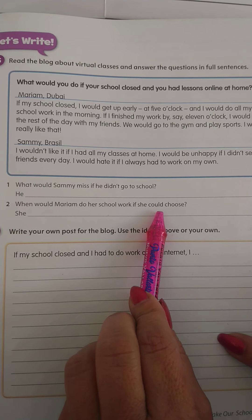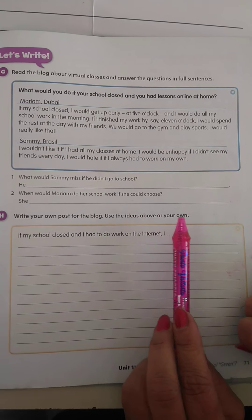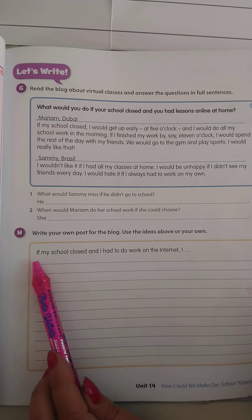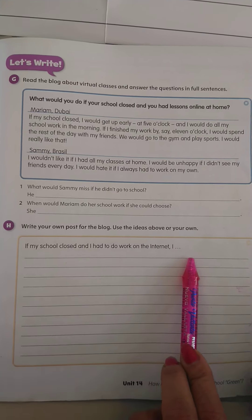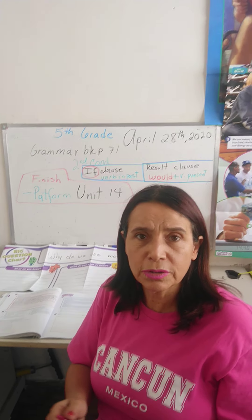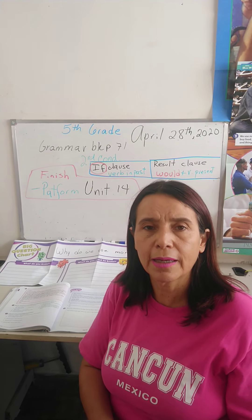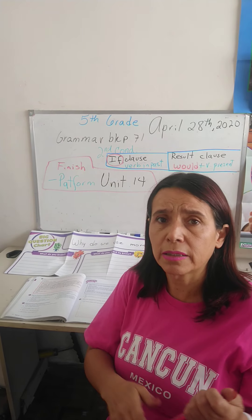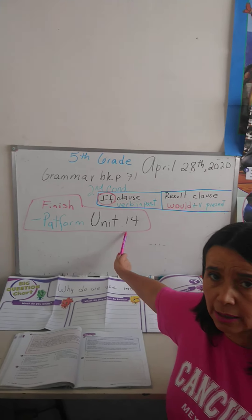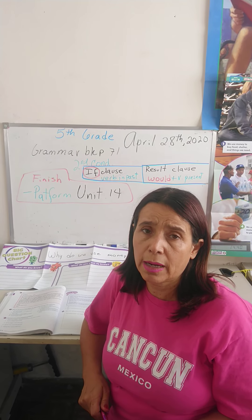Let's do number one: What would Sammy miss if he didn't go to school? You have to look for the answer in Sammy's text. Then: when would Maryam do her school work if she could choose? She's telling it there, so you have to answer that. And now you have to write your own post for the blog using the ideas above or your own. If my school closed and I had to work on the internet — and unfortunately this is a reality, we didn't close but as there is that virus, we have to stay at home. So we can keep on working, and you are doing great. I know you are doing your best.